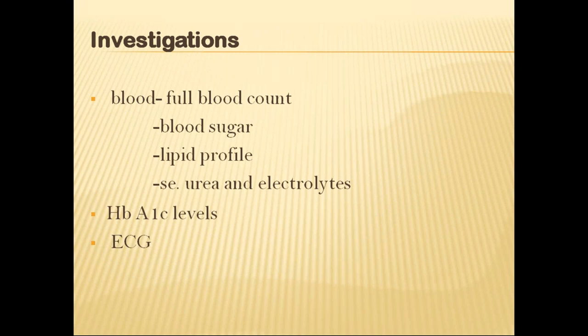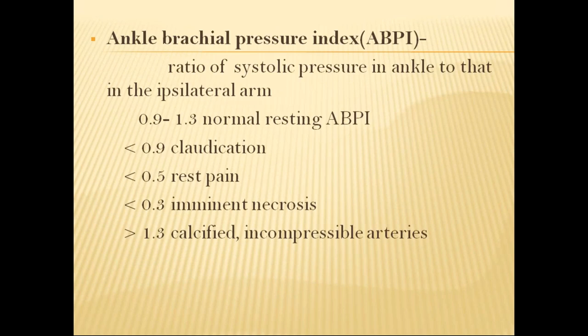Regarding investigations: all routine blood investigations, lipid profile, HbA1c levels, and ECG should be done. The ankle-brachial pressure index is very important — measure the pressure in the brachial artery and at the ankle. If the ABPI is more than 1.3, the vessels are calcified or incompressible. Between 0.9 and 1.3 is normal. Less than 0.9 indicates claudication. Less than 0.5 indicates rest pain. Less than 0.3 indicates imminent necrosis.